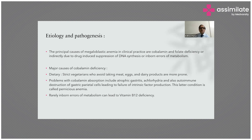Problems with cobalamin absorption include atrophic gastritis, achlorhydria, and autoimmune destruction of gastric parietal cells leading to failure of intrinsic factor production — a condition known as pernicious anemia. Rarely, inborn errors of metabolism can also lead to vitamin B12 deficiency.